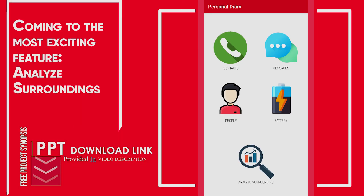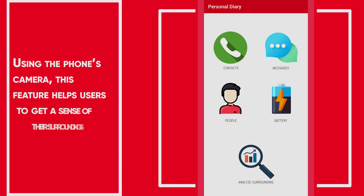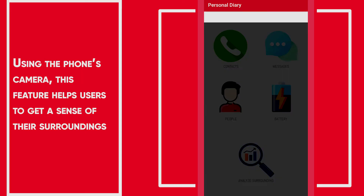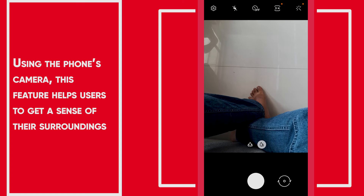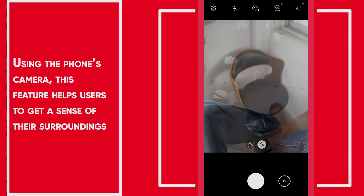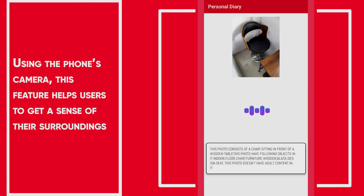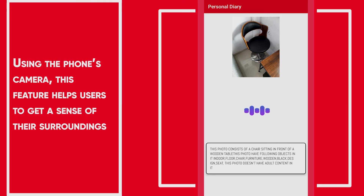Coming to the most exciting feature — Analyze Surroundings. Using the phone's camera, this feature helps the user to get a sense of their surroundings. For example: "This photo consists of a chair sitting in front of a wooden table. This photo has the following objects in it: indoor floor, chair furniture, wooden black design."